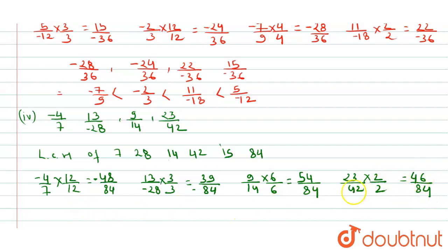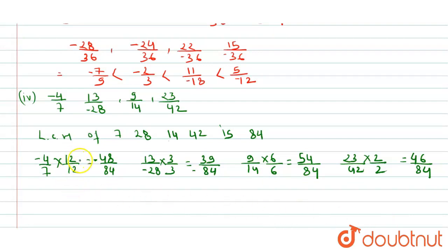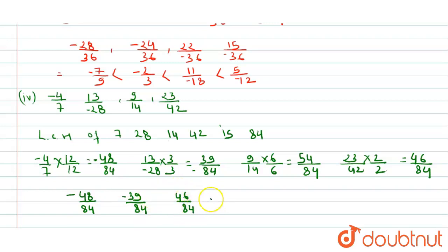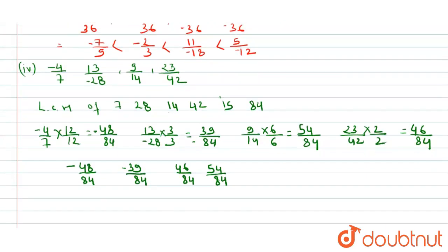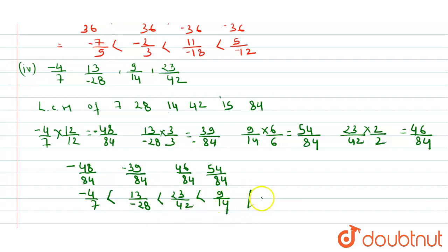Arranging in ascending order — lowest to greatest: -48/84, then -39/84, then 46/84, then 54/84. Replacing with original numbers: -4/7 < 13/(-28) < 23/42 < 9/14. This is our answer for the fourth question.